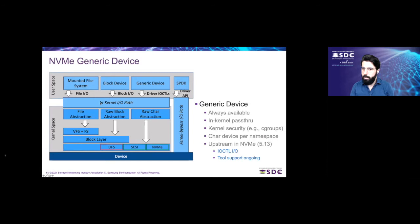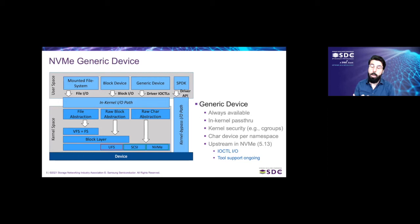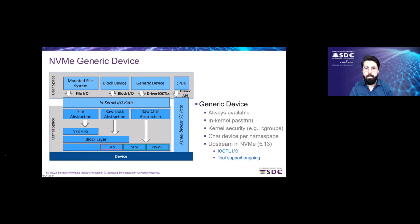This is where the NVMe generic device comes into place. When you get a new namespace, it typically comes as a block device — your NVMe X and Y, 0, 1, 2, 3, etc. Now you will also see a char device coming alongside, very similar to the char device that comes for the controller, like NVMe0 and NVMe1. This device will always be available. So if some features of that NVMe namespace are not supported by the block layer, the block device may be rejected or come up as capacity zero or read-only, but the char device will always be there.